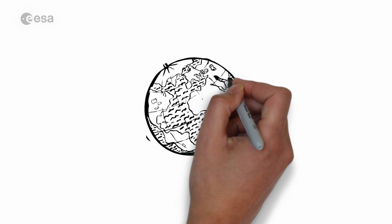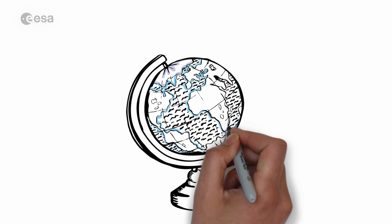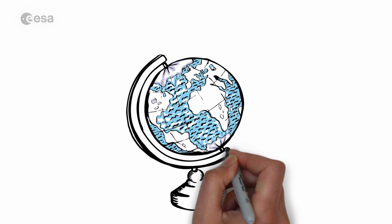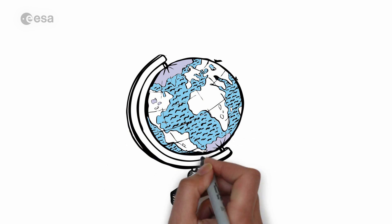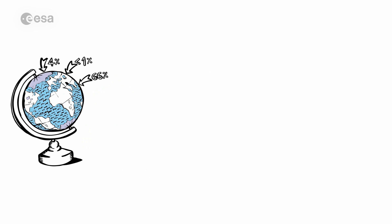This is our home planet Earth. It's called the Blue Planet because most of it is covered by water. About two-thirds is covered by oceans and another four percent by fresh water in the form of ice sheets, glaciers, lakes and rivers.